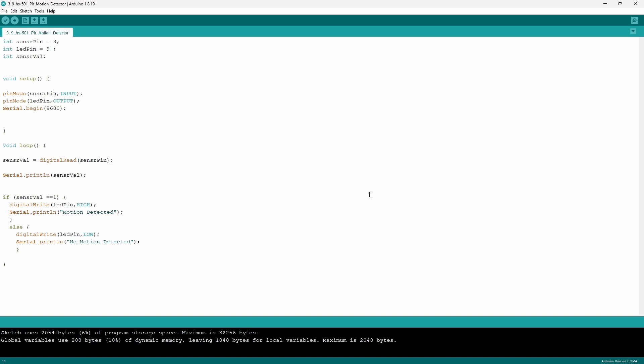Now onto the code it's quite simple since there's no library going to be used. We have only three variables. The first variable is going to store the pin that's connected to the sensor. The second is going to store the pin that's connected to the LED and the final is going to store the value of the sensor output.